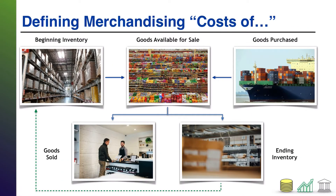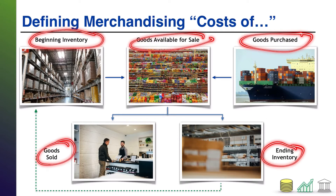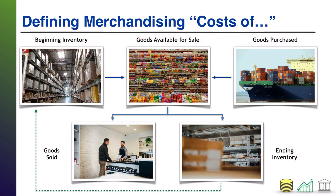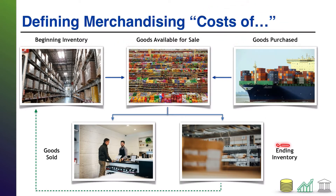Typically in accounting you'll hear the phrase 'cost of' and then you insert a phrase here. And you'll see a lot of those things listed on this slide: beginning inventory, goods available for sale, goods purchased, ending inventory, goods sold. So you could insert the phrase 'cost of' before any one of these phrases and that would be a valid accounting term.